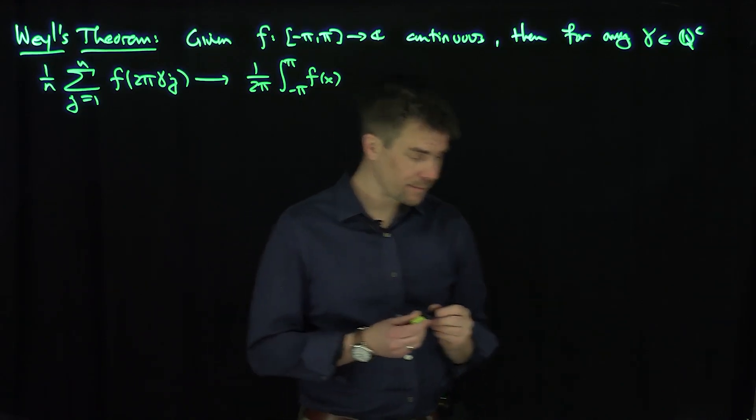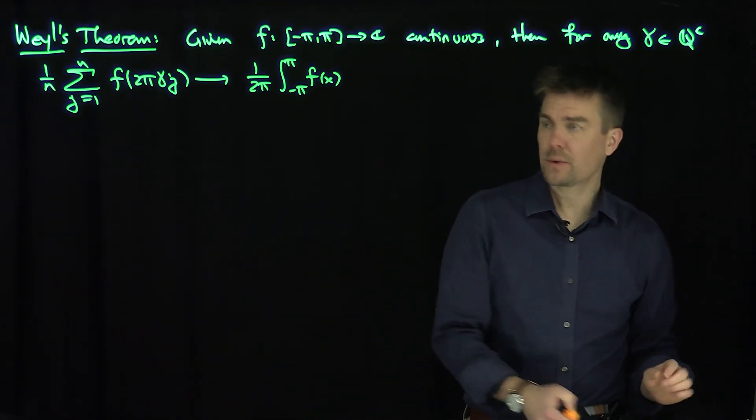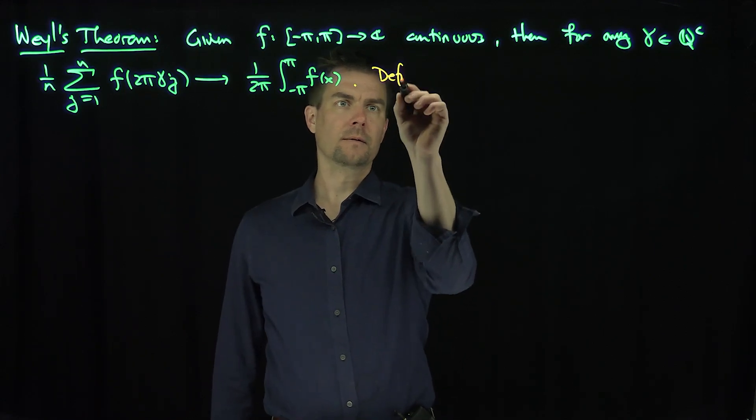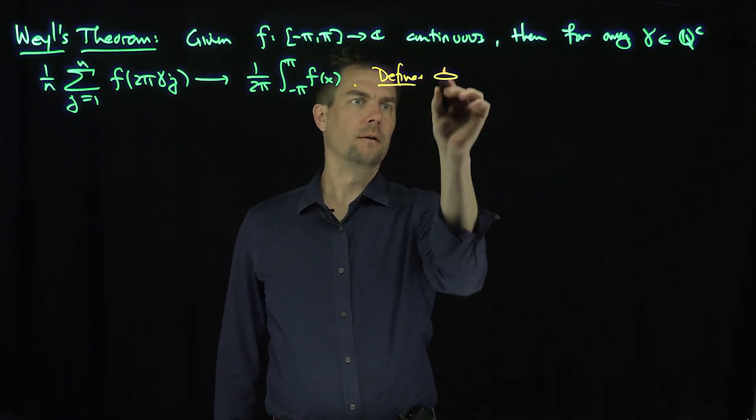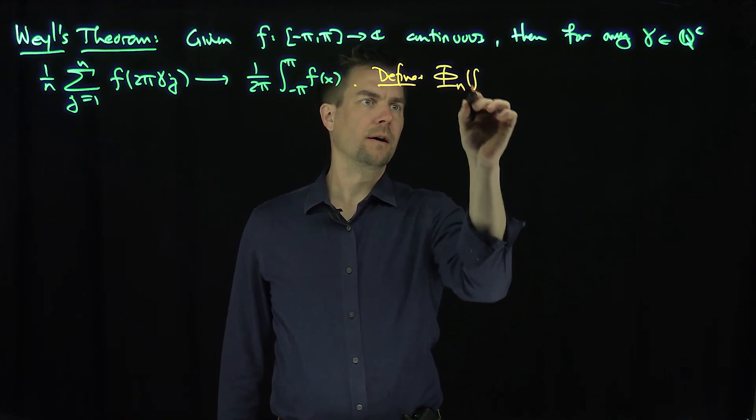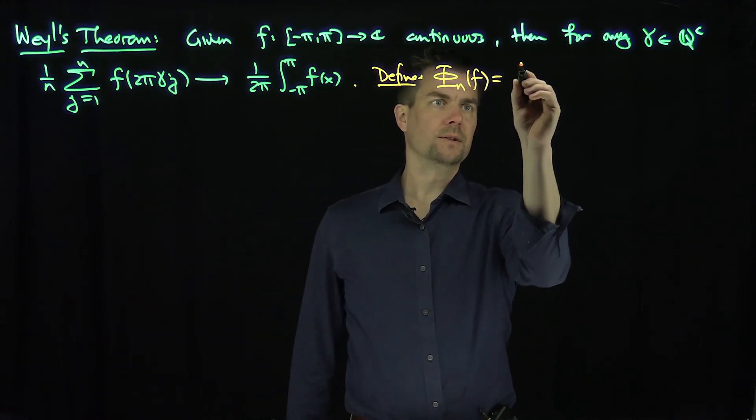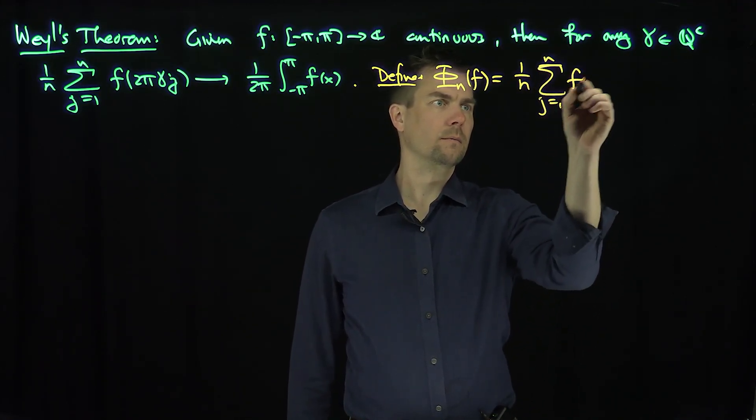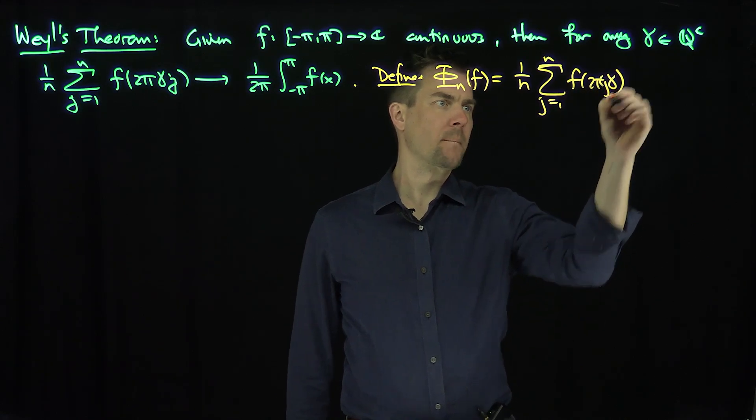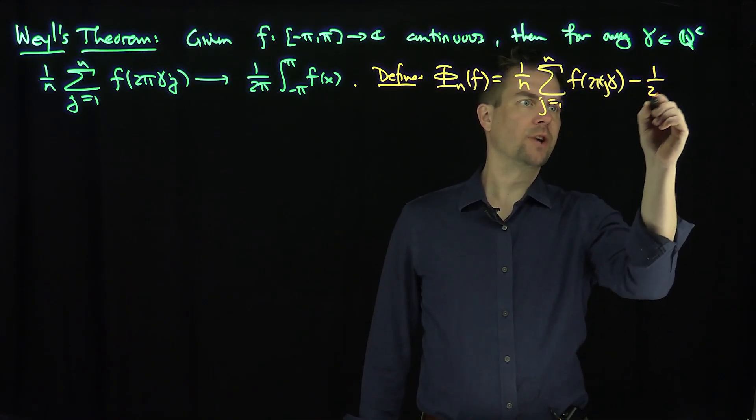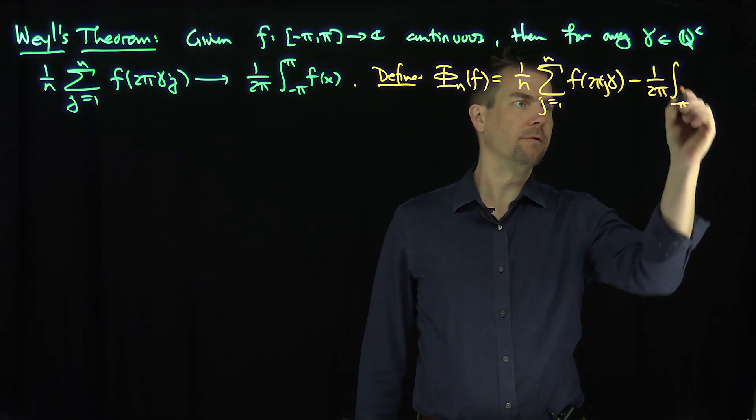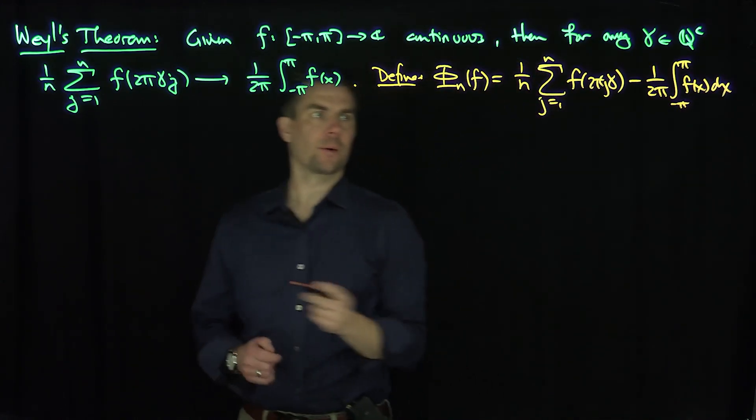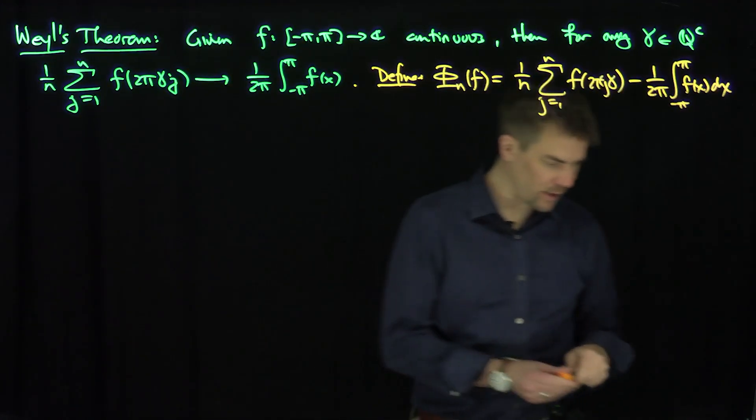Weyl's Theorem is very useful in number theory. So what we're going to do is the following. To prove this, I'm going to define φ_n of f to be this sum over here minus the integral. And so our objective now is to show that this function φ_n tends to 0 as n tends to infinity. So let's do that.